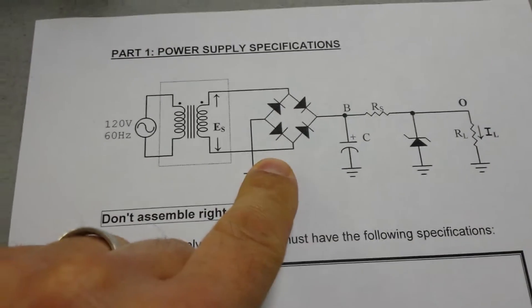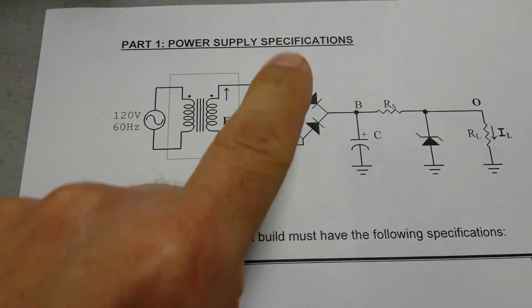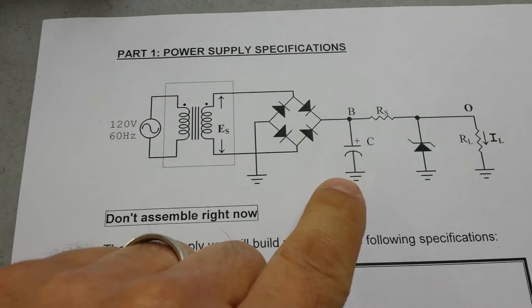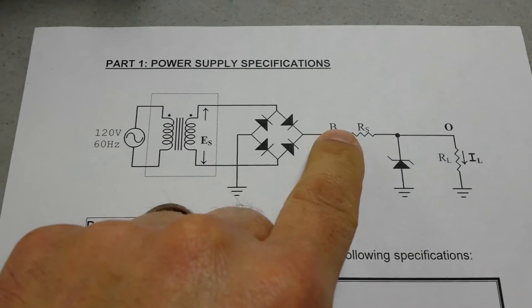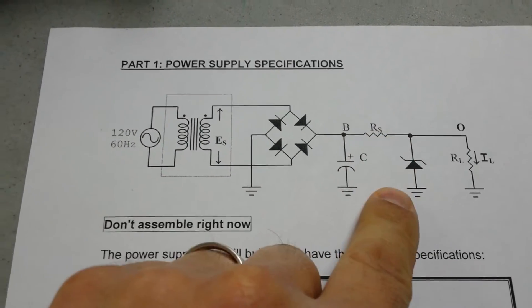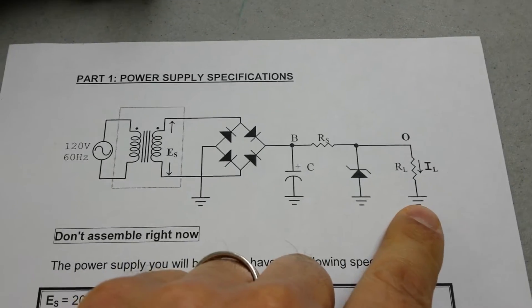So I want the actual bridge rectifier like that, I want the diodes in a diamond shape, capacitor, the RS resistor horizontally, the zener diode vertically, and then the RL.